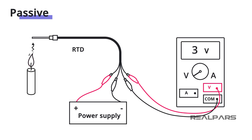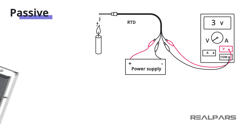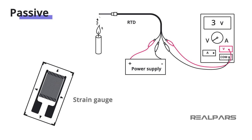It is a device whose resistance will change with a change in temperature. To take advantage of this change in resistance, an external supply, or an excitation circuit, is required to produce a change in voltage. Another example of a passive sensor is a strain gauge.